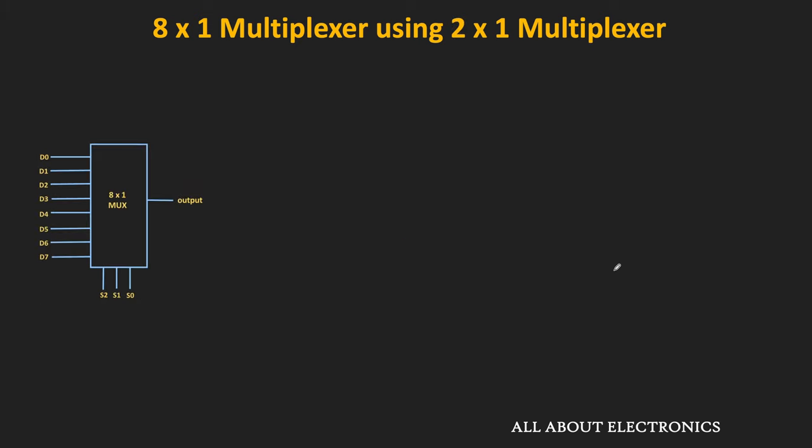If we want to design the 8-to-1 MUX using only 2-to-1 MUXes, we need to replace the 4-to-1 MUX with 2-to-1 MUXes as well. For that, we require 3 more 2-to-1 MUXes. The 4 inputs of the 4-to-1 MUX are given to 2 multiplexers, and to select any one of the 2 outputs, we require 1 more multiplexer. The selection line S1 is connected to those 2 multiplexers, while S2 is connected to the last multiplexer. Using a total of 7 such 2-to-1 MUXes, we can design the 8-to-1 MUX.